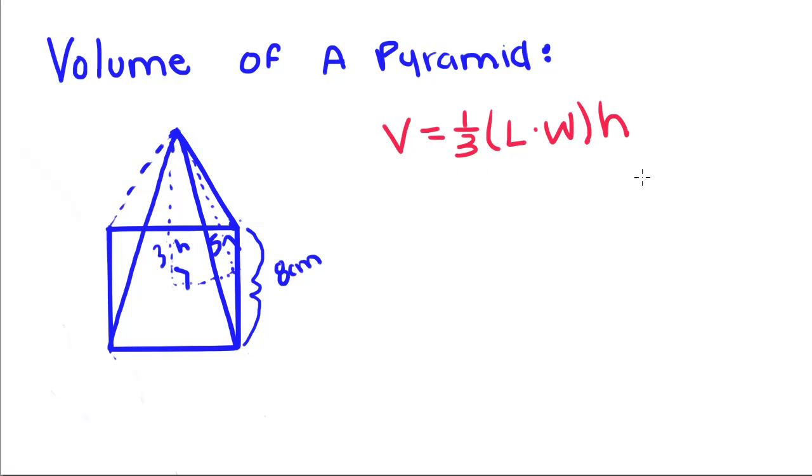Since we're multiplying these and multiplication is commutative, it doesn't matter what order we multiply in as long as we multiply the right stuff. Volume is equal to one-third, and since we know that the bottom of this is a square, it'll be 8 times 8, or 8 squared, times our height, which is this line right here, which just so happens to be 3.